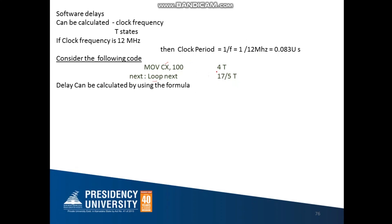The MOV instruction has 4 T-states or 4 clock cycles. The loop instruction will either take 17 T-states or 5 T-states, depending on whether CX is equal to 0. If CX is equal to 0, it will take 5 T-states to execute. If CX is not equal to 0, it will take 17 T-states or 17 clock cycles.